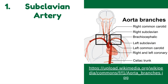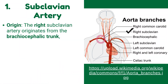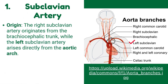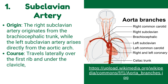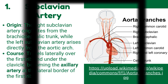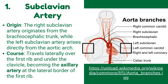Number 1: the subclavian artery. The right subclavian artery originates from the brachiocephalic trunk, while the left subclavian artery arises directly from the aortic arch. It travels laterally over the first rib and under the clavicle, becoming the axillary artery at the lateral border of the first rib.